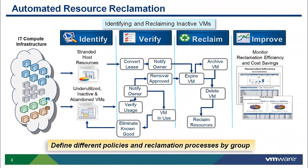So what is automated resource reclamation? In short, it's the ability to identify unused or underused resources and put an automated process in place to reclaim them so they can be used for other purposes. The vCloud Automation Center can do just that. Let's discuss the four stages.